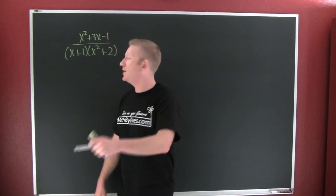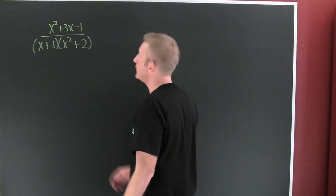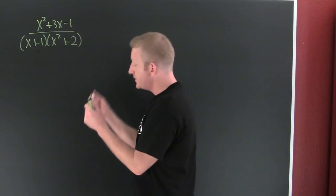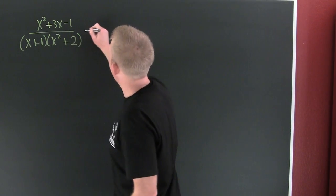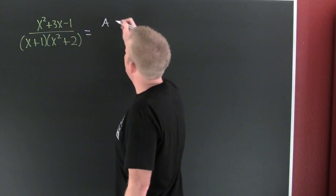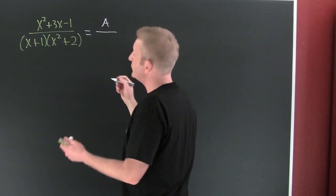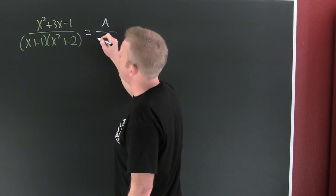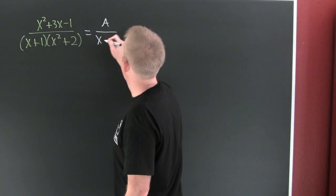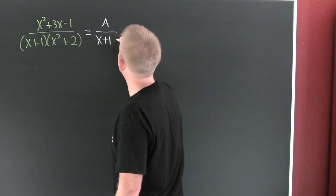It's about how we break it down. This is a linear factor. So when I un-add these fractions, I'm going to have a constant, which is one degree less than that linear factor — X plus one.